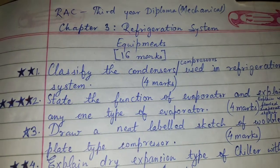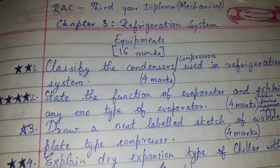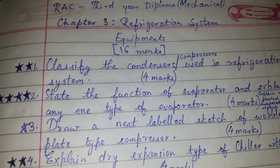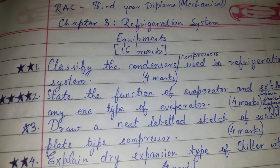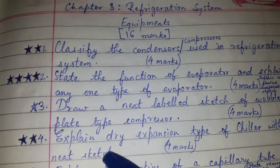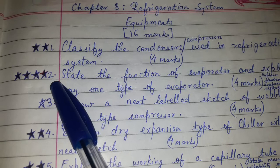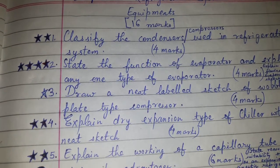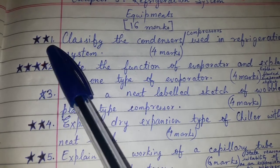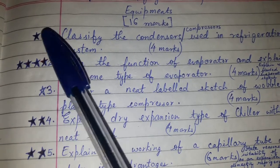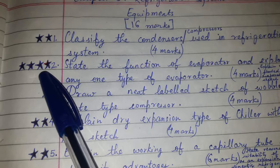The topic of discussion is the question bank for chapter number three, refrigeration system equipments, for the subject RAC — Refrigeration and Air Conditioning — third year diploma mechanical. The questions which are important here are those marked with more than one star; those questions are more important or more likely to be asked in the exam.